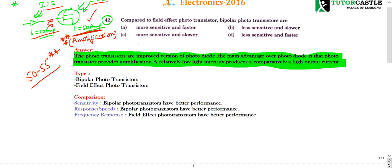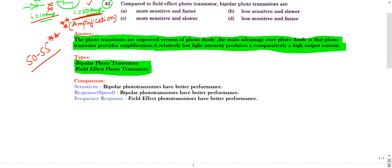Now let us see, there are two types of photo transistors, just like you have two types of transistors: bipolar junction transistors and field effect transistors. Similarly, photo transistors also have two types: bipolar photo transistors and field effect photo transistors.